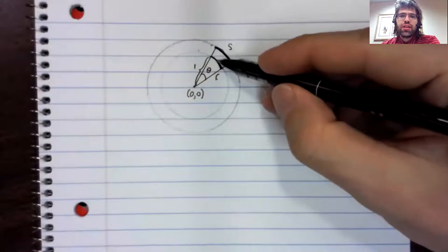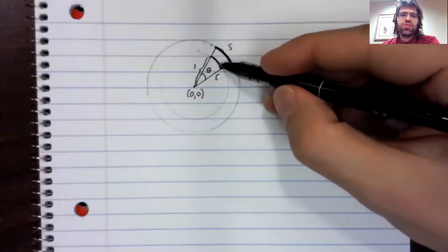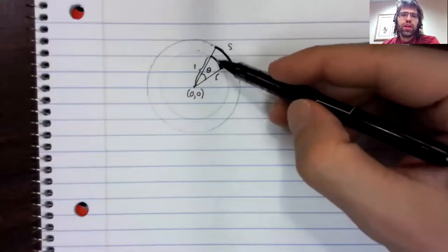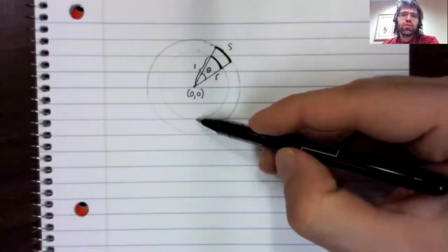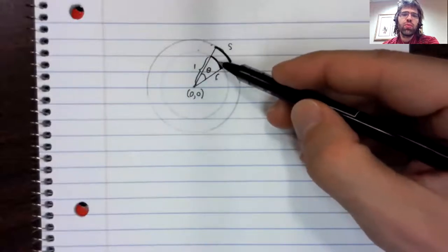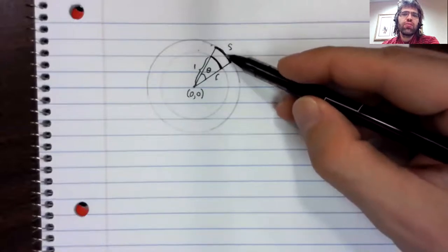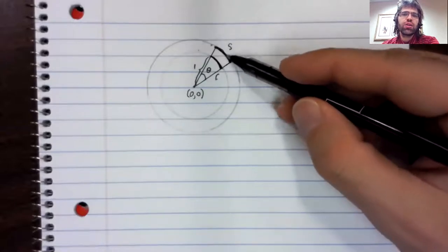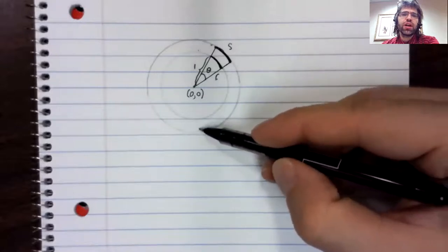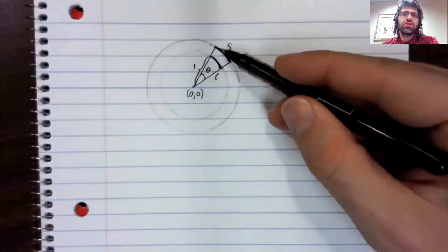The ratio of this arc and the entire circumference of this circle is the same as the ratio of this arc and the entire circumference of this circle.